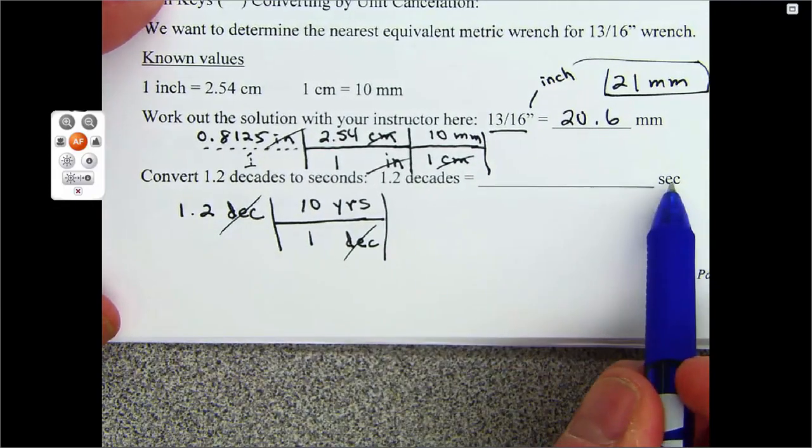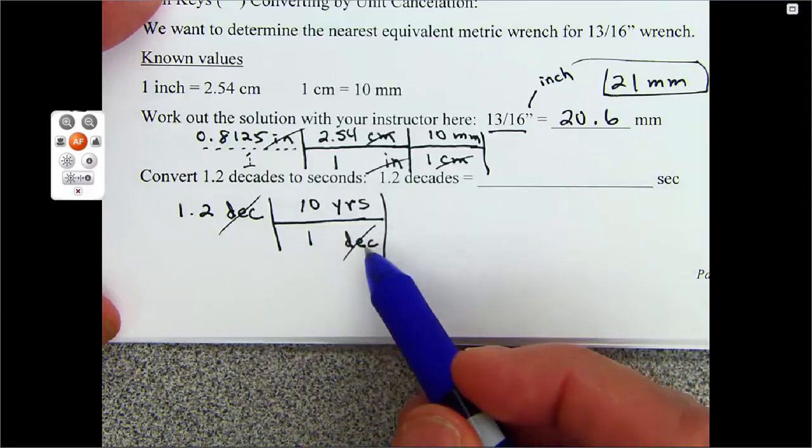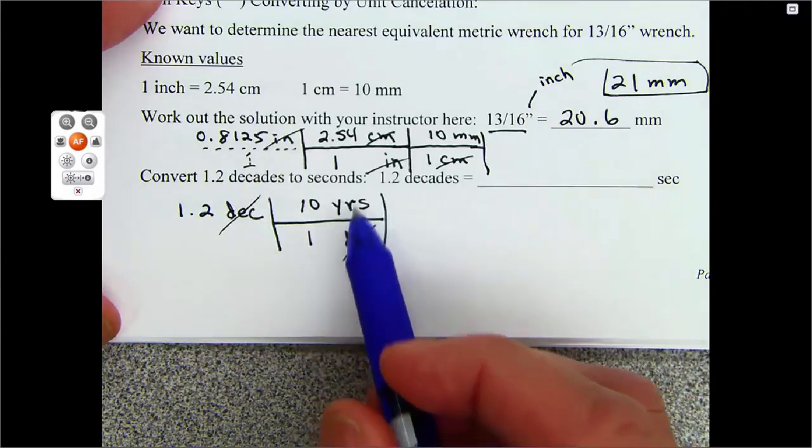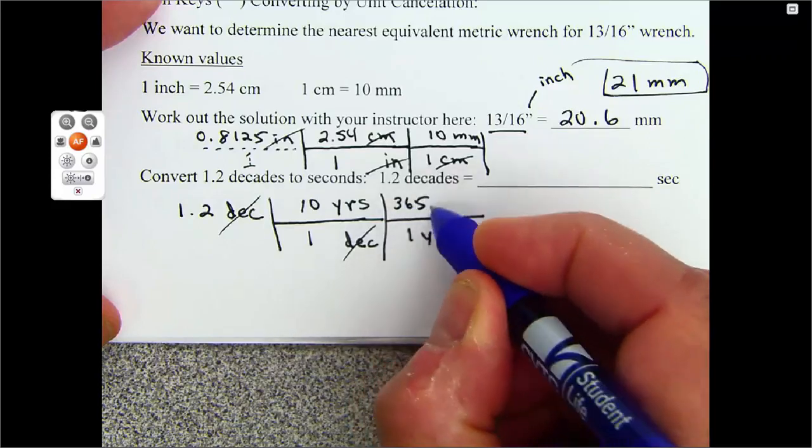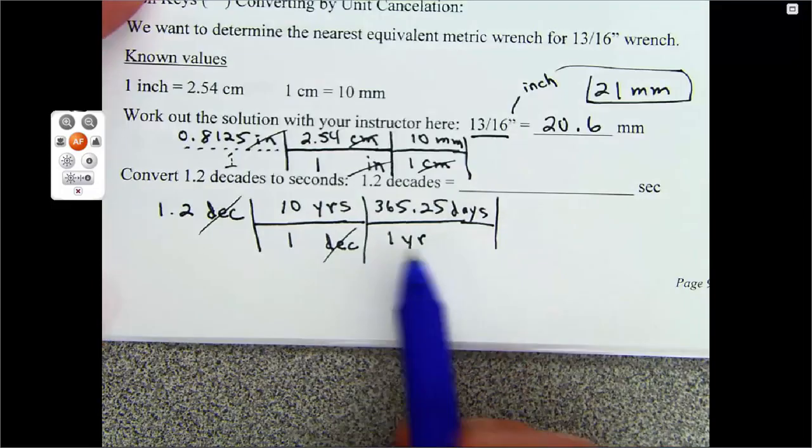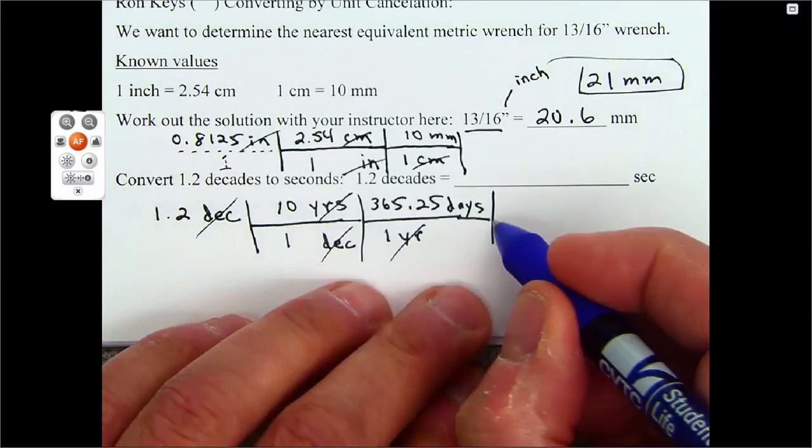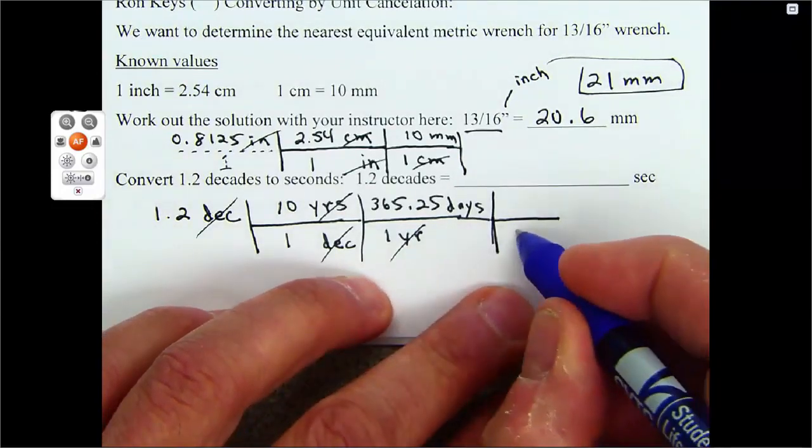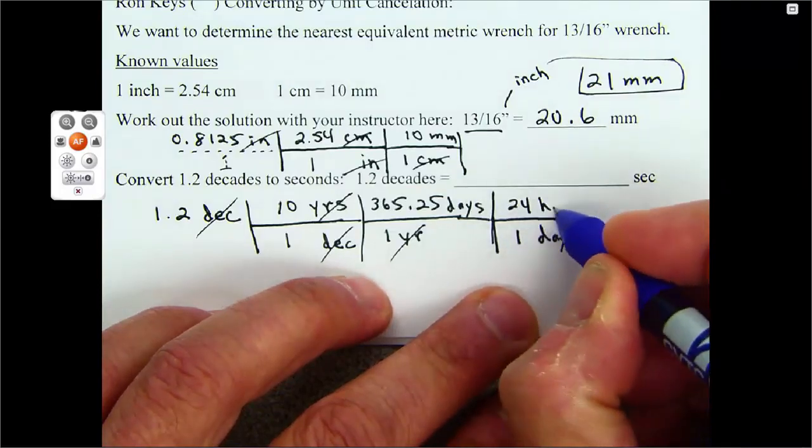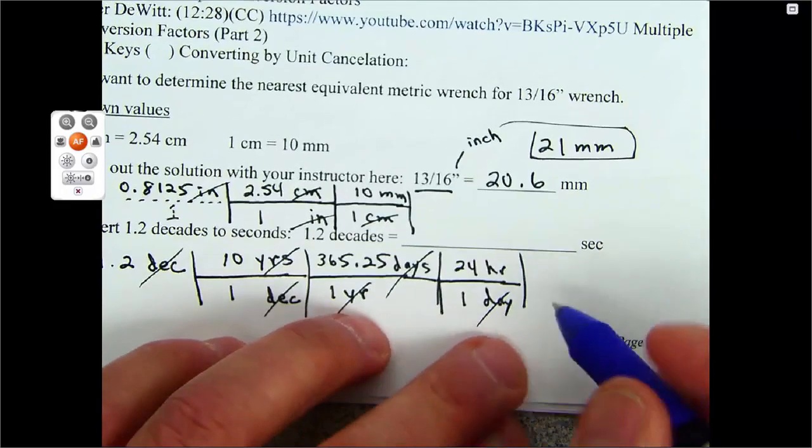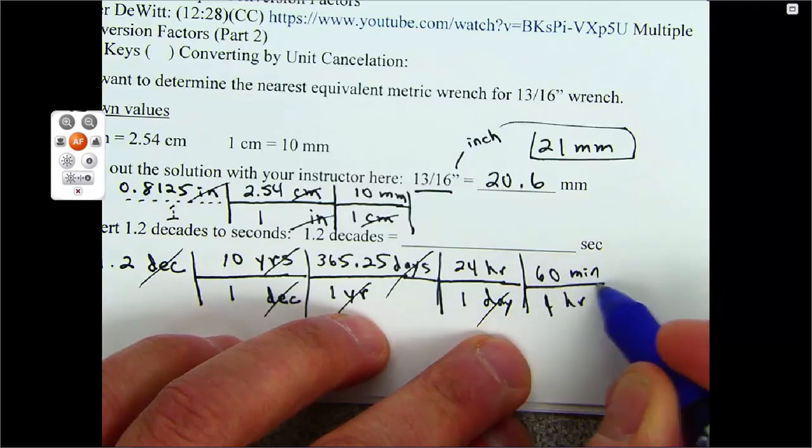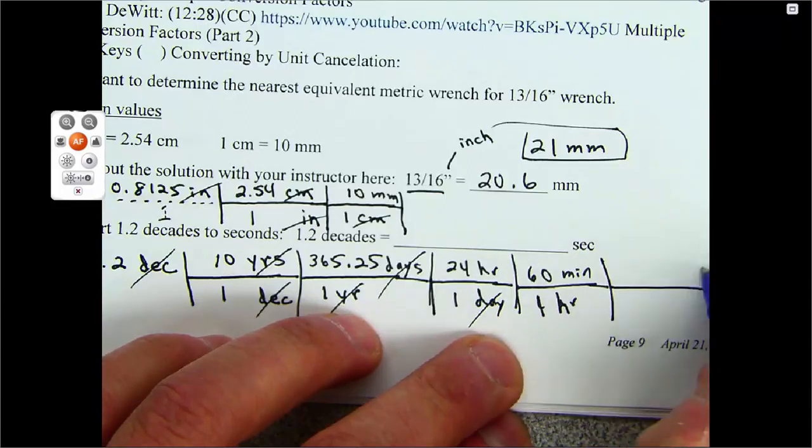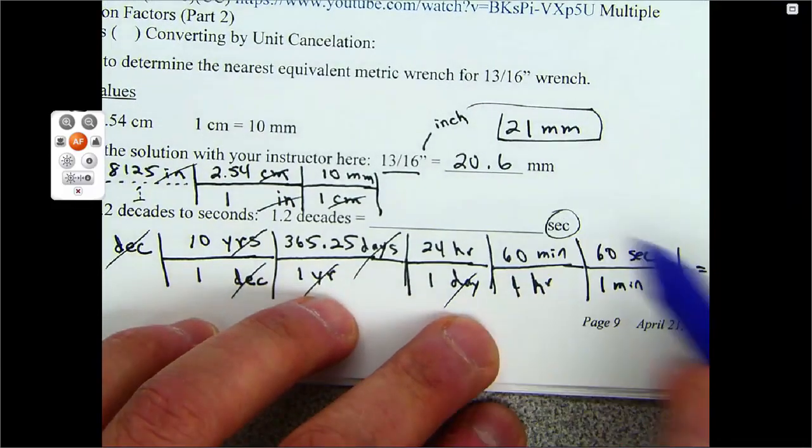I'm going to keep going until I get seconds up here. You can do this in one, two, three, four, five steps. It doesn't matter how many steps as long as what you put in here is a true mathematical statement. One year is 365.25 days. You want the .25 days because every four years is leap year. Years cancel out. Now I need to keep going because I don't have seconds. One day, 24 hours. Days cancel out. One hour is 60 minutes. One minute, 60 seconds. And I'm done because I'm looking for seconds and I have seconds.